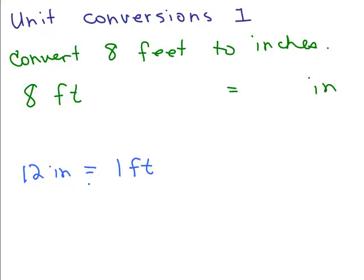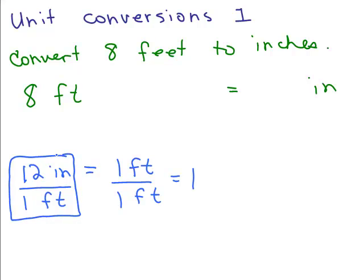Now if these two things are equal, then from algebra you could divide both sides by the same thing. So I could divide both sides by let's say 1 foot. Dividing both sides by the same thing. But notice 1 foot divided by 1 foot is really the same thing as the number 1. So this right here is another way of writing the number 1.